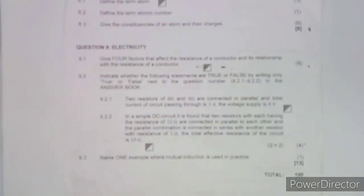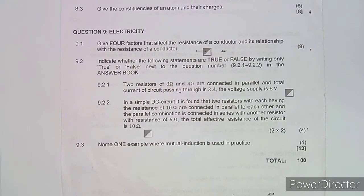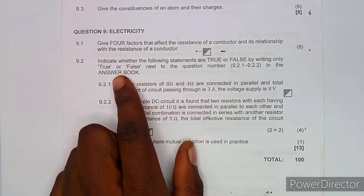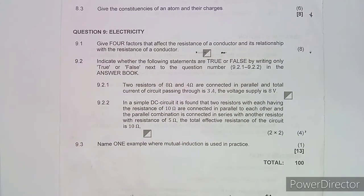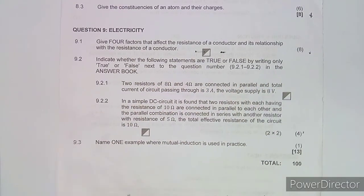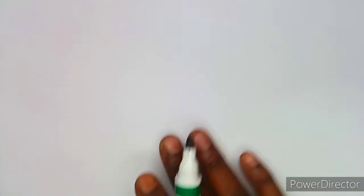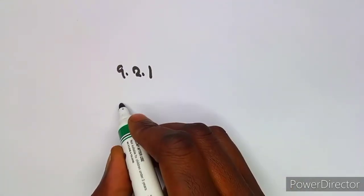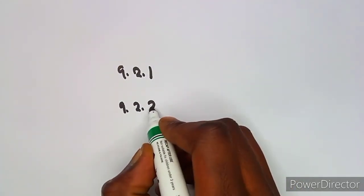Moving on to question 9.2.1: indicate whether the following statements are true or false by writing only 'true' or 'false'. No calculations are needed in your answer, but you should do them separately to verify. For 9.2.1 write true or false, same for 9.2.2.